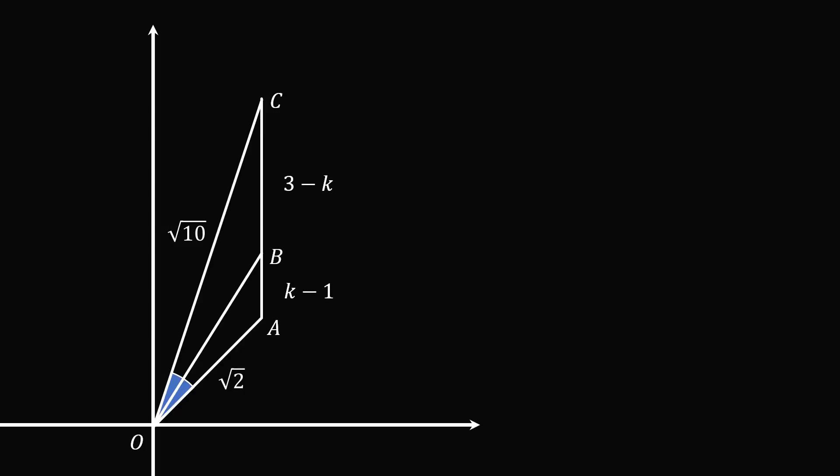We now know that the line OB is the angle bisector of angle COA, and thus we can use the angle bisector theorem. This implies that OC over BC is equal to OA over AB. We can substitute these values in.